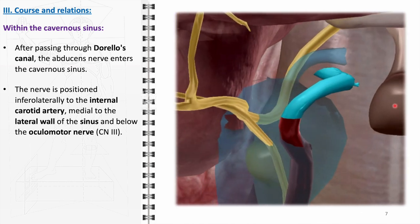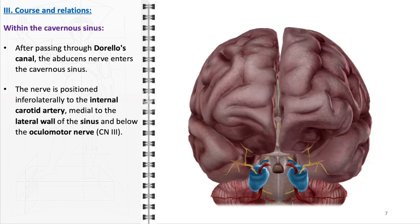Additionally, the nerve is located medial to the lateral wall of the sinus. This medial position is unique among the cranial nerves that traverse the cavernous sinus, as most others — including the oculomotor nerve, the trochlear nerve, and the ophthalmic and maxillary branches of the trigeminal nerve — are embedded in the lateral wall. The abducens nerve's course through the substance of the sinus exposes it to potential injury or compression from lesions within or adjacent to the cavernous sinus, such as tumours, inflammatory conditions, or thrombosis.